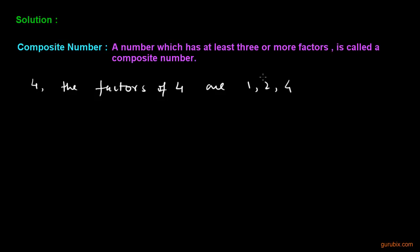Therefore, the factors of 4 are 1, 2 and 4 and if we count them, these are 3 in counting: 1, 2, 3. Therefore, 4 is a composite number. Let us take another example.